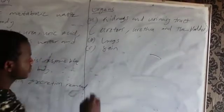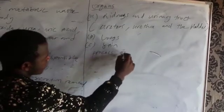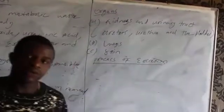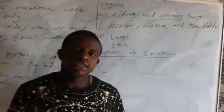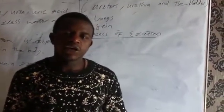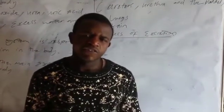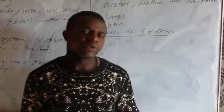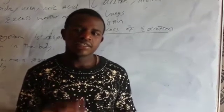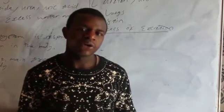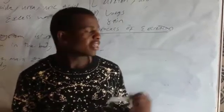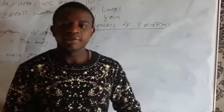Let us look at the process of excretion. The chemical reactions that occur in the body produce waste products. If these waste products are left to accumulate in the body, they are going to change the internal environment of the cells, the cells are going to die, and the whole organism is going to die. The process of excretion removes these waste products from the blood that continues to supply the body.